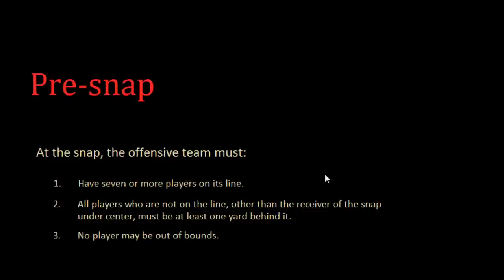The first three stipulations are: at the snap, the offense must have seven or more players on the line; all players who aren't on the line must be at least one yard behind it; and no player can be out of bounds.